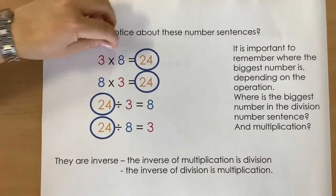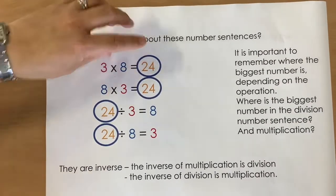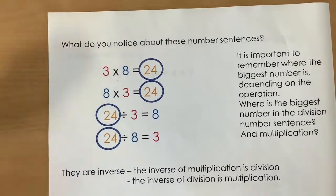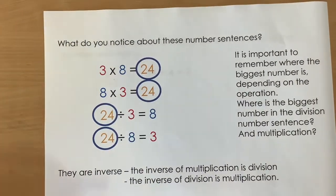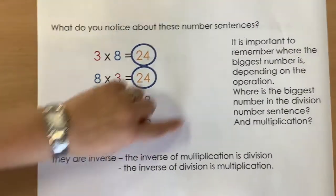And we can see the relationship between the numbers in the number sentences. So if we have three groups of 8, the answer is 24. If I take that lot of 24 and I then split it up into three groups again, I know that I'll have 8 in each because all of the numbers are related.